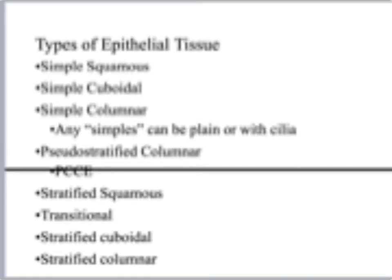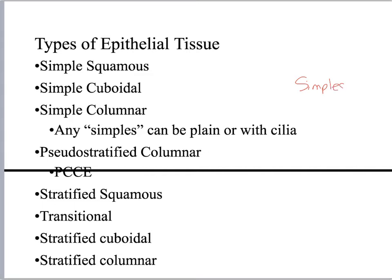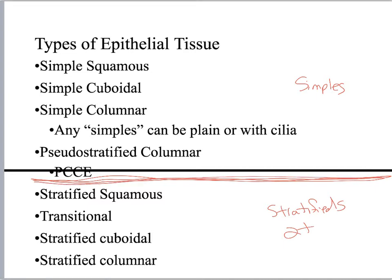This slide I am just showing you the boundary between simples and stratifieds: epithelial types that have one row and epithelial types that have two plus rows. Pseudostratified, even though it looks stratified, is technically one layer. So you've got simple squamous, simple cuboidal, simple columnar.